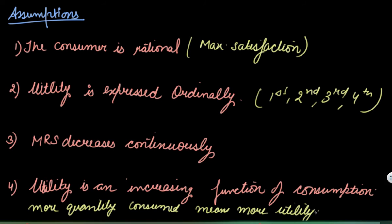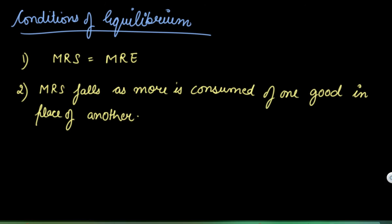As you increase your consumption, you have more utility from it. Such preferences are called monotonic preferences. These are the assumptions for consumer equilibrium in the case of ordinal analysis. There are two conditions to find out your consumer equilibrium.